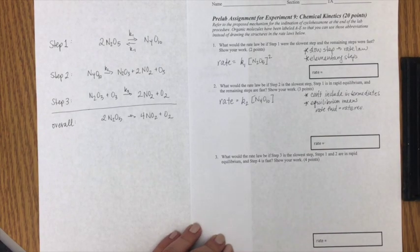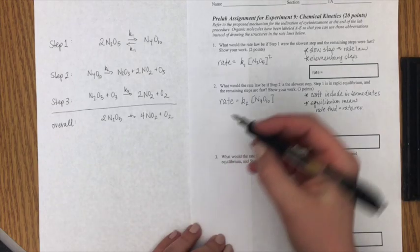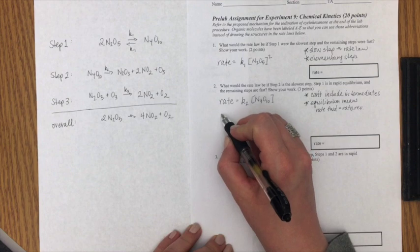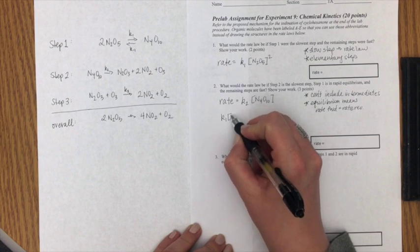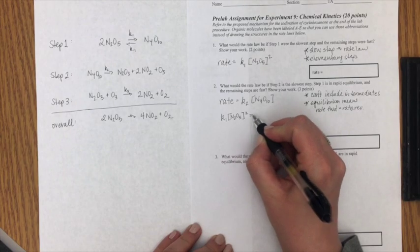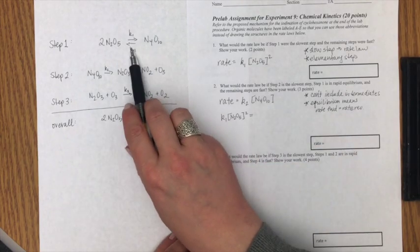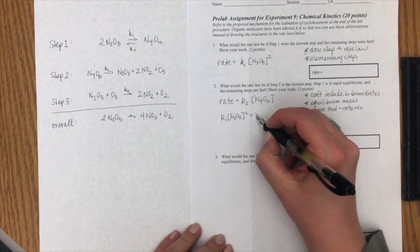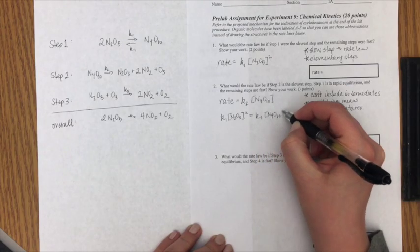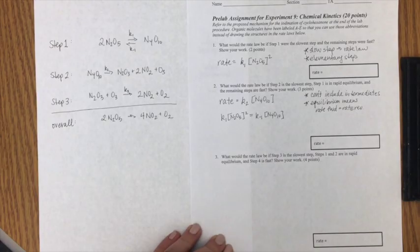So now what I'm going to do is I'm going to use that information about step one and I'm going to write an expression for the forward reaction. The forward reaction would be K1 times N2O5 squared just like we did before. And now because it's in equilibrium it's going to equal K-1 times N4O10 which is the rate of the reverse reaction.